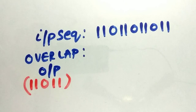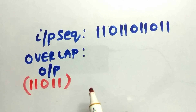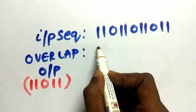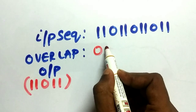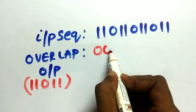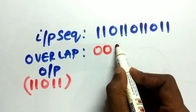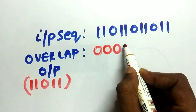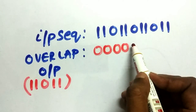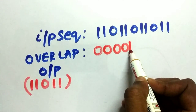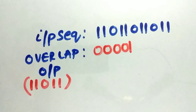Let us find the pattern 11011 in this input sequence for the overlap case. The first bit doesn't give the output we require, the second bit does not either, and the third bit does not. Similarly with the fourth bit, but at the fifth bit we got our pattern, so our output will be 1.